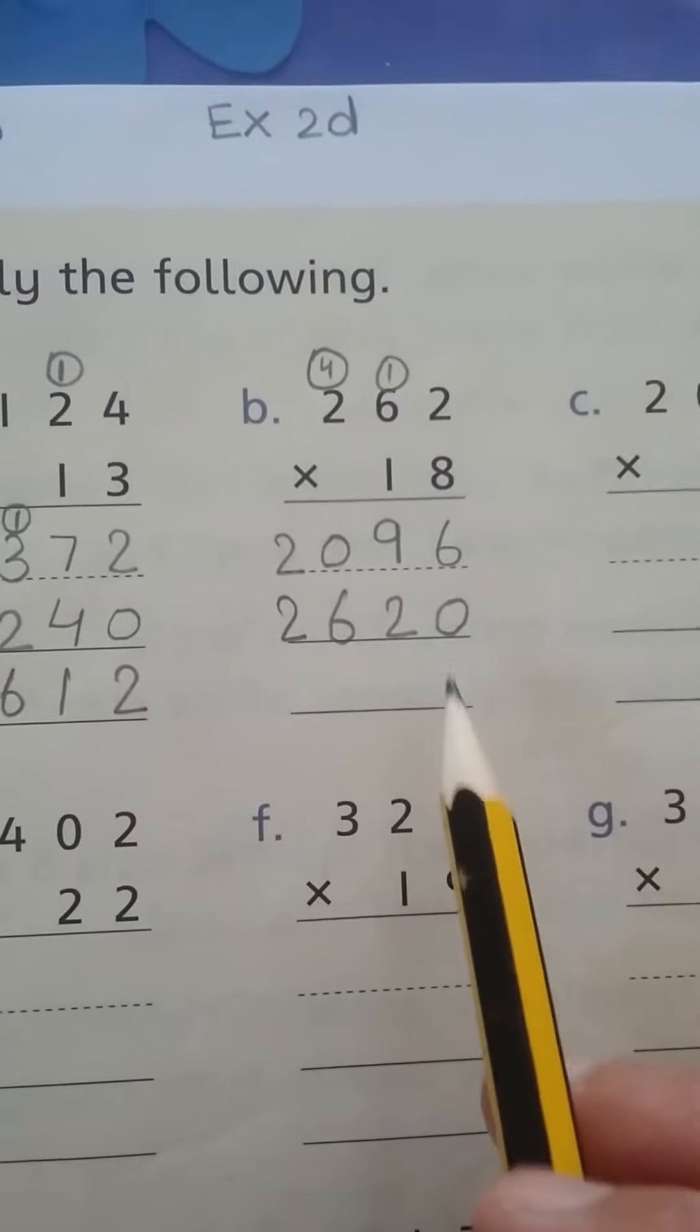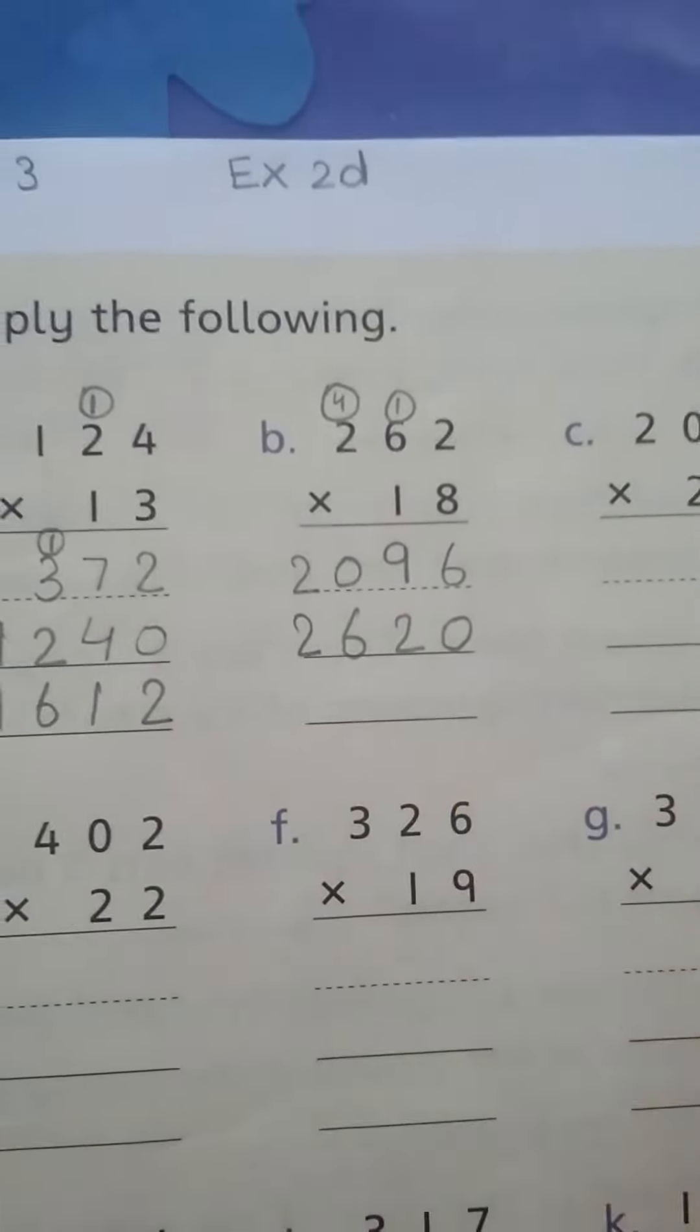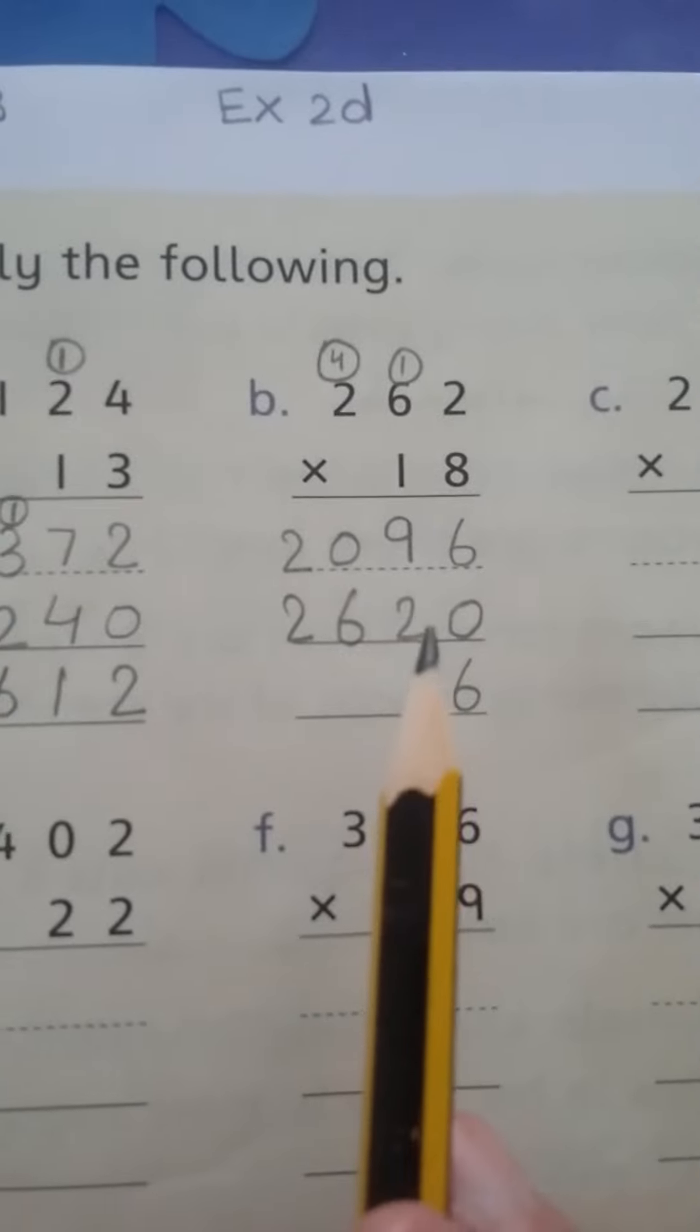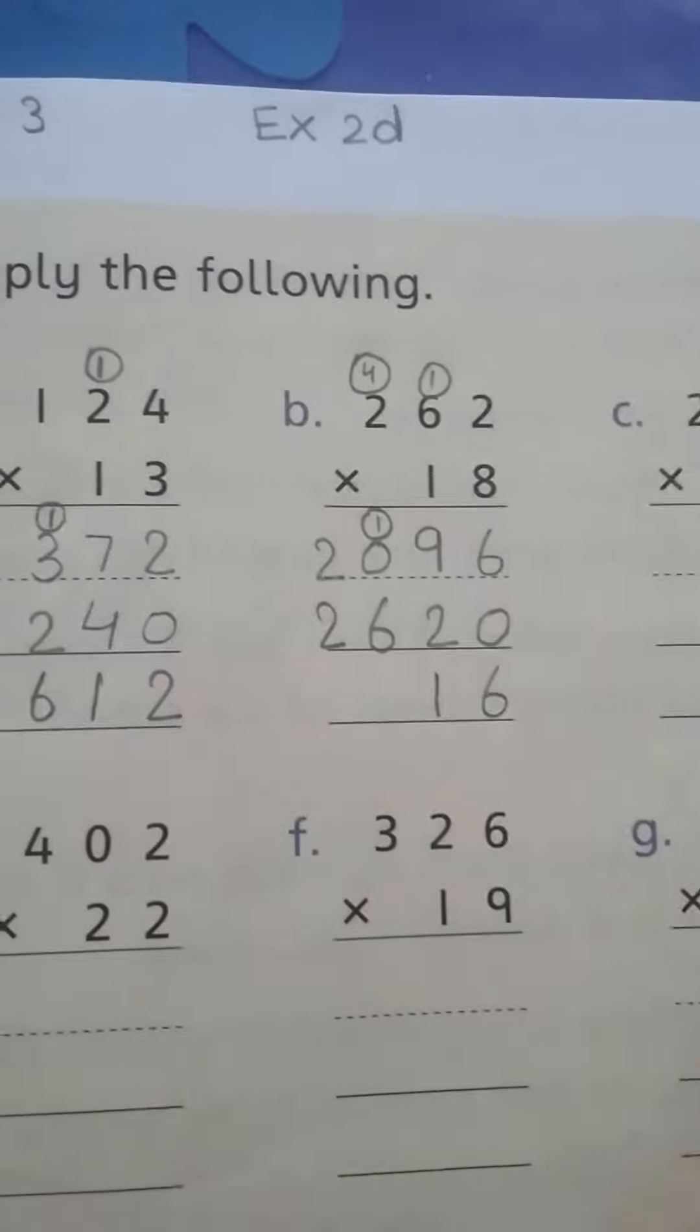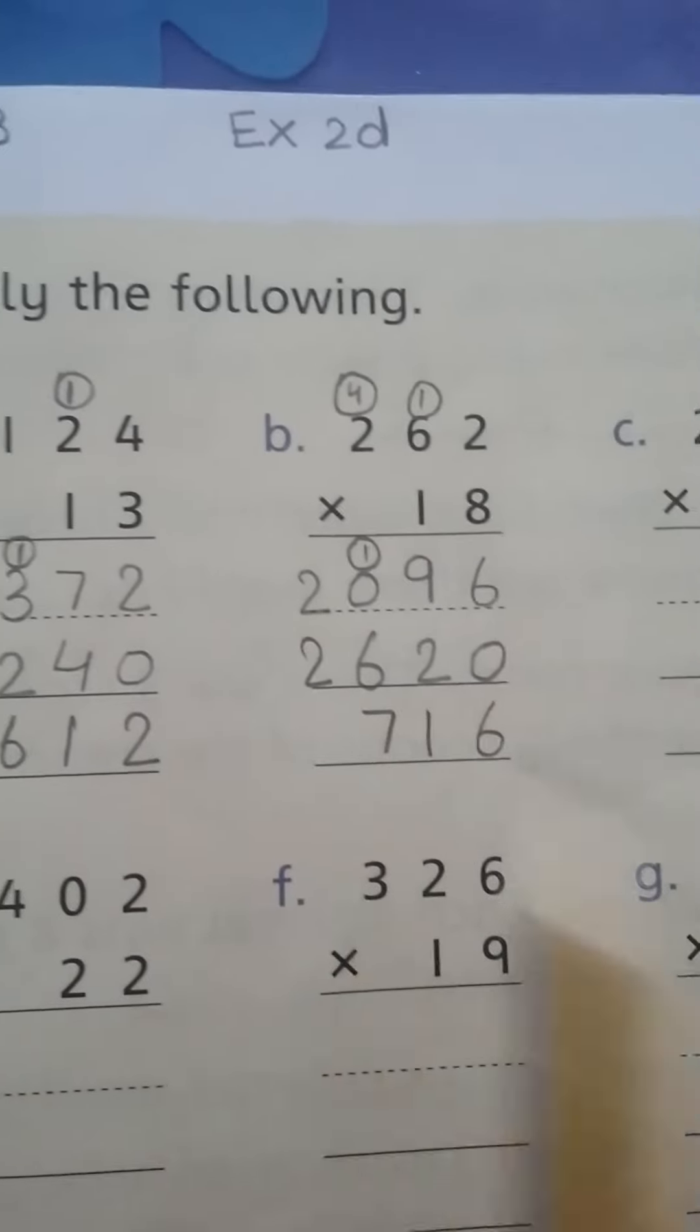Six plus zero is six. Nine plus two is eleven. One plus six is seven. Two plus two is four.